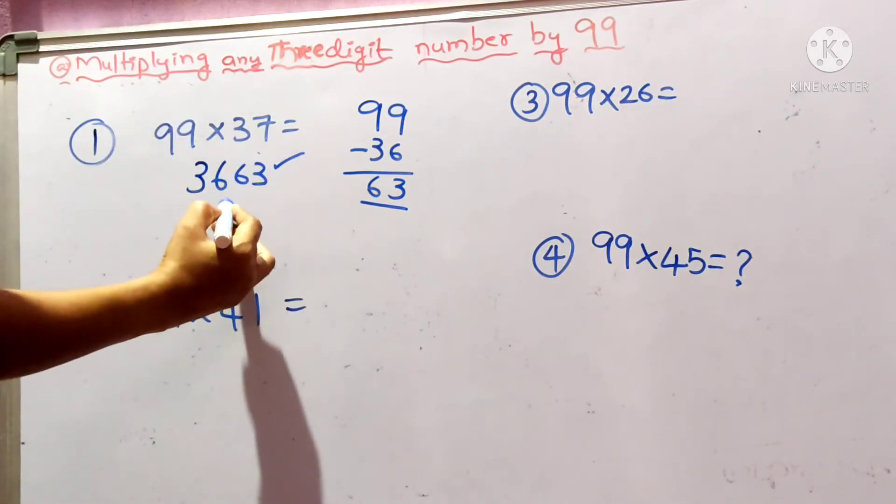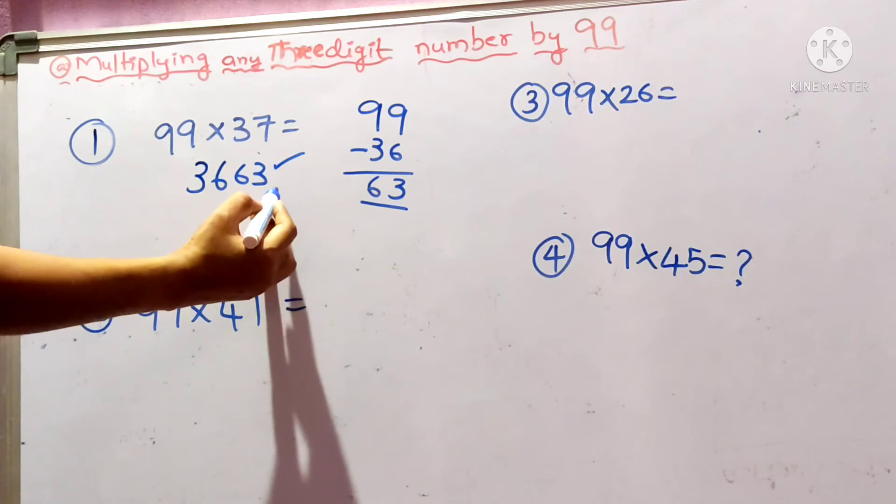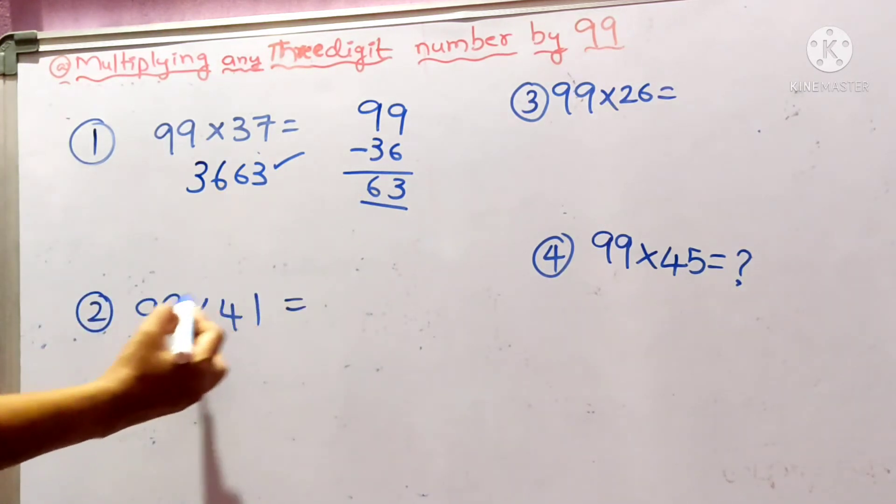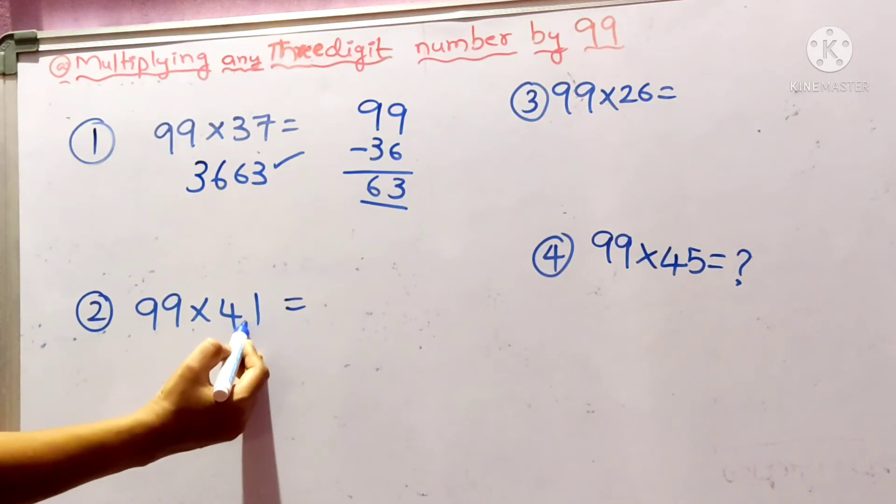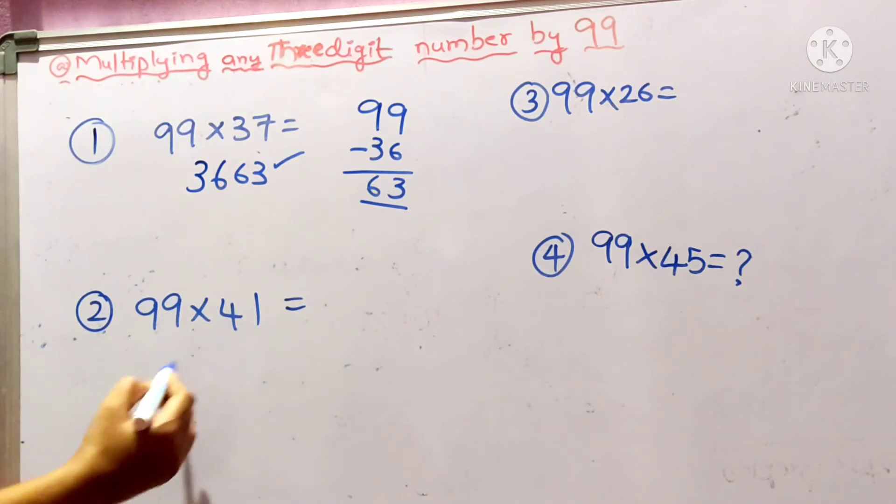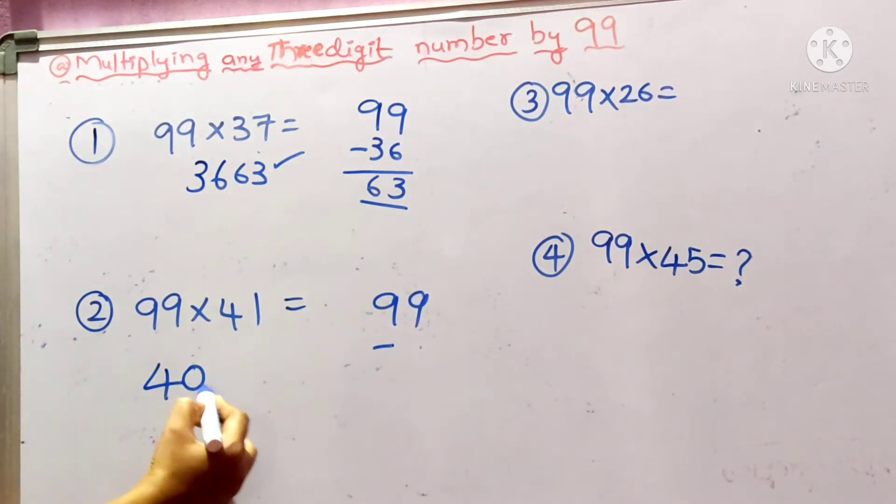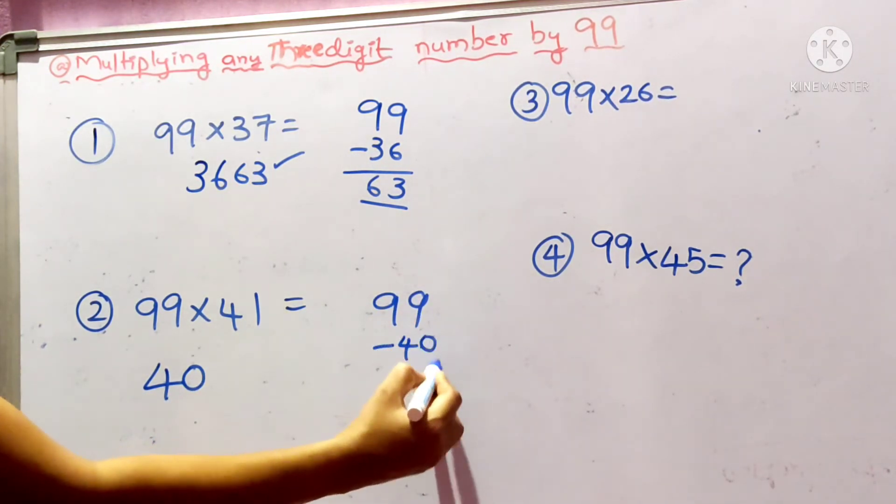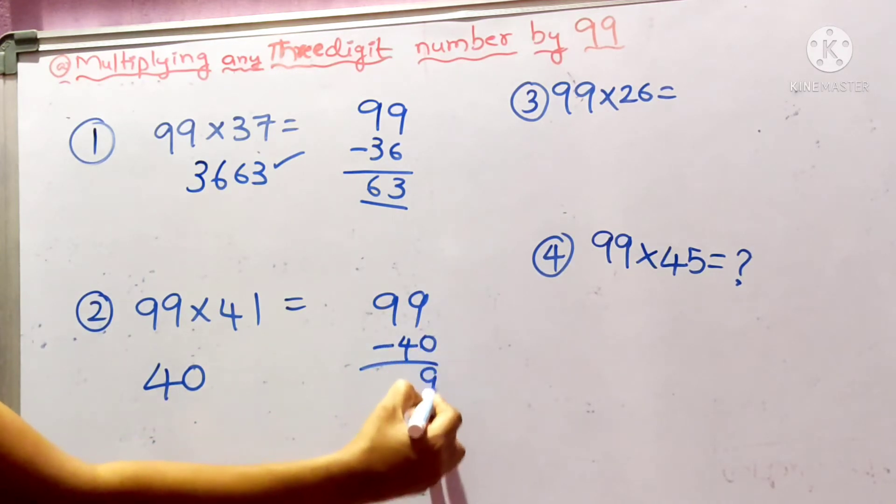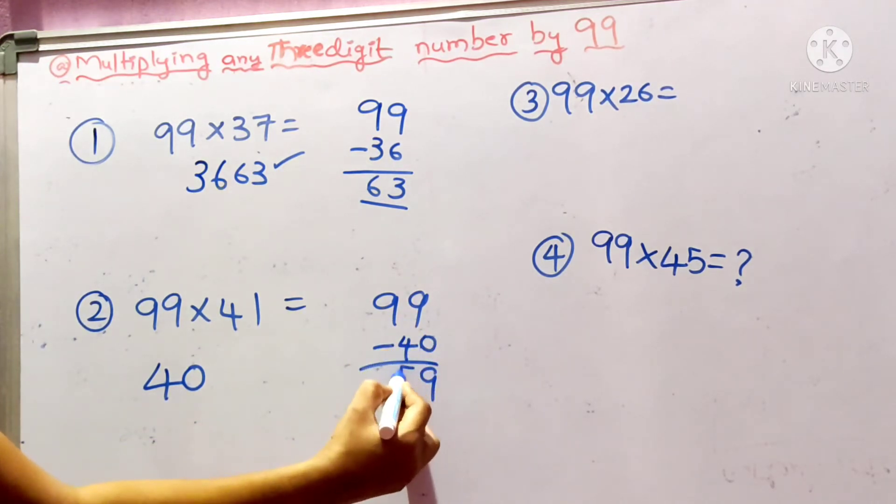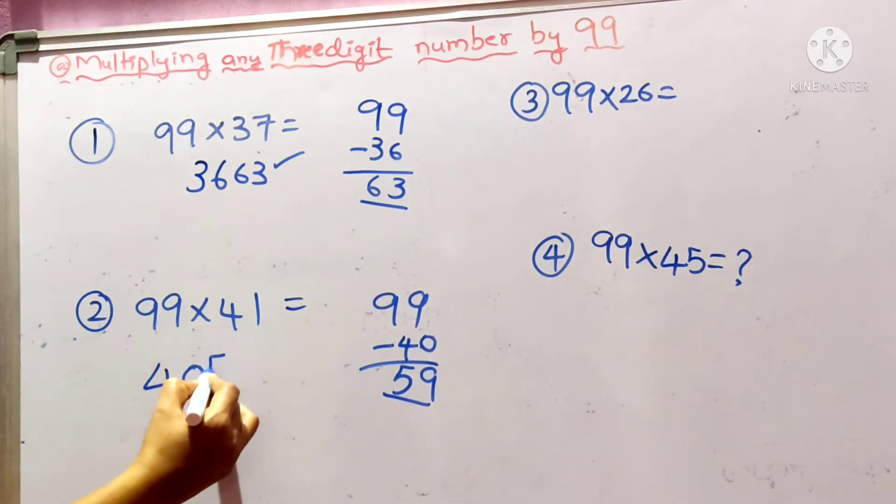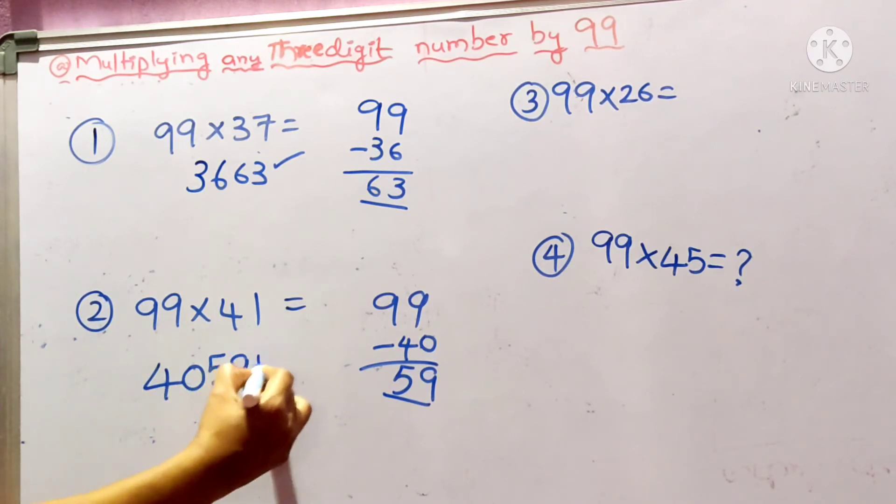Now 99 minus this value, which is 36. Subtract: 9-6 is 3, 9-3 is 6. Write 63 here. So the answer is 3663. You can check with the calculator how fast I am doing. Similarly, 99×41. Less than 1 to 41 is 40. Now 99 minus 40: 9-0 is 9, 9-4 is 5, which is 59. The answer is 4059.